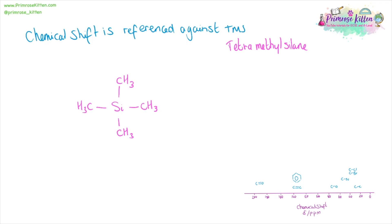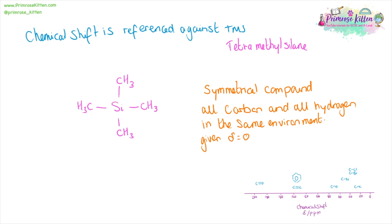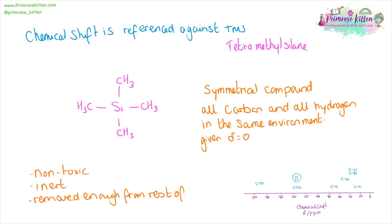TMS is symmetrical, so every single carbon and every single hydrogen is going to be in the same environment. TMS is non-toxic, it is inert, and because it sits all the way over at zero, it is removed enough from the rest of the spectra to make interpretation easy.